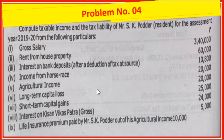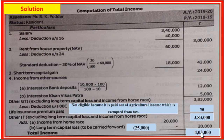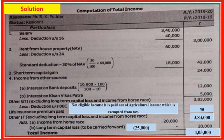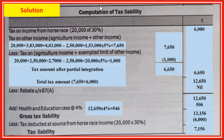Problem number 4, which we discussed in the last video - we solved up to total income, where the total income comes to 4,03,000. Now, as there is agriculture income of rupees 20,000, partial integration is to be applicable. We will see this casual income of horse race with a special rate of tax, that is 30 percent. Computation of tax liability: tax on income from horse race - 20,000 into 30 percent equals 6,000.